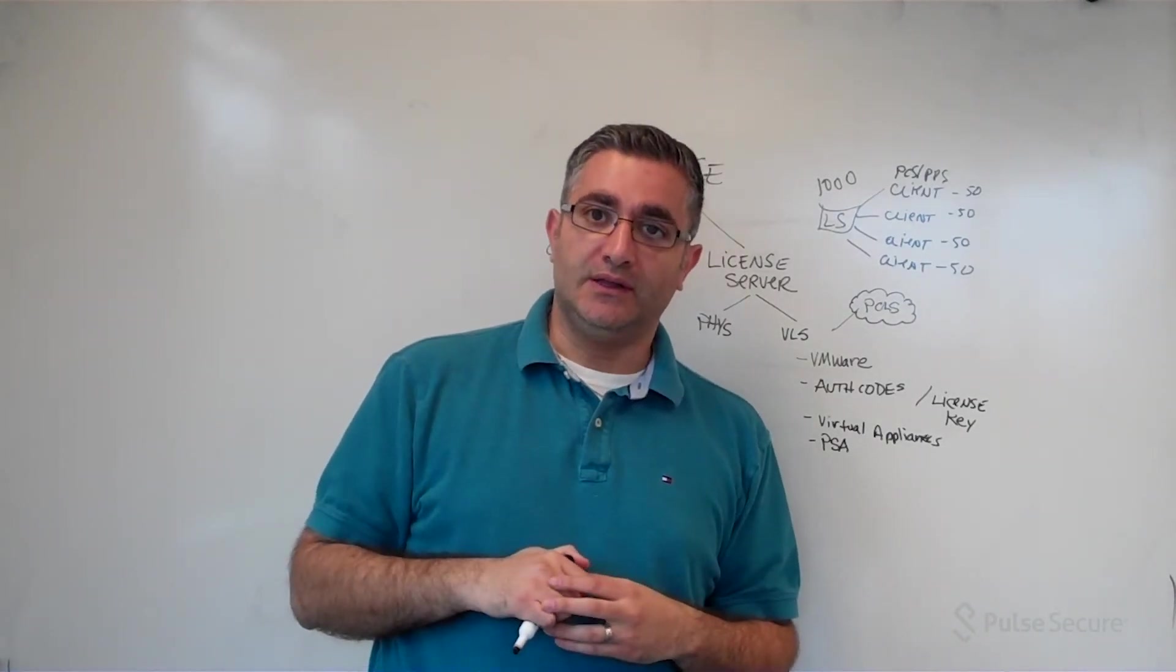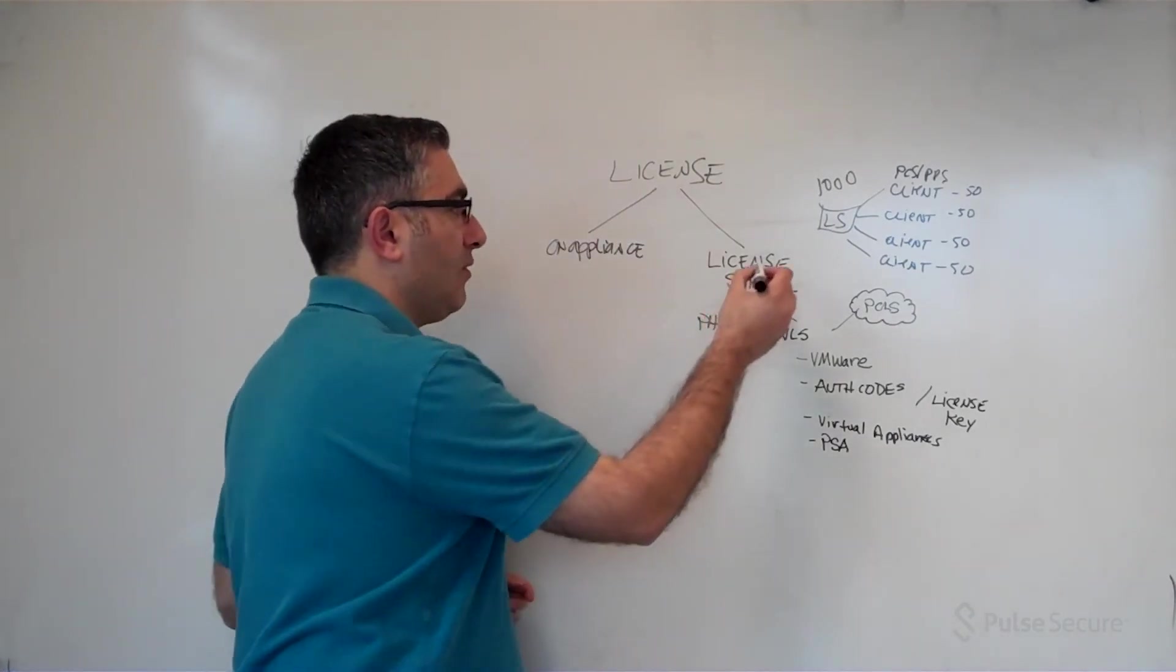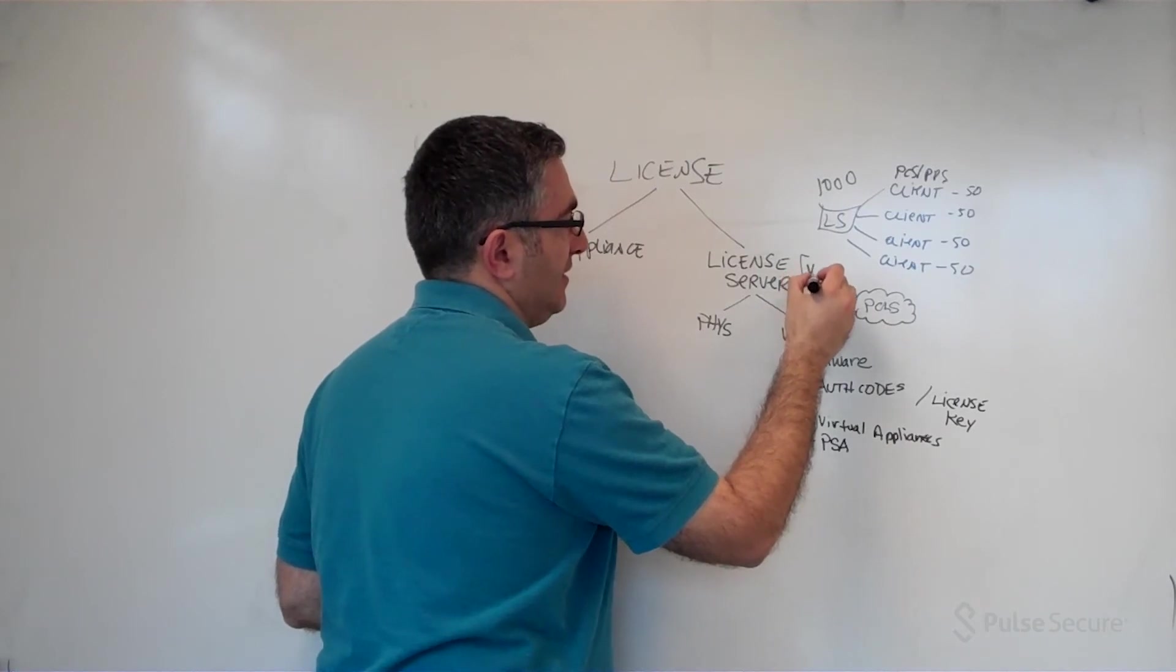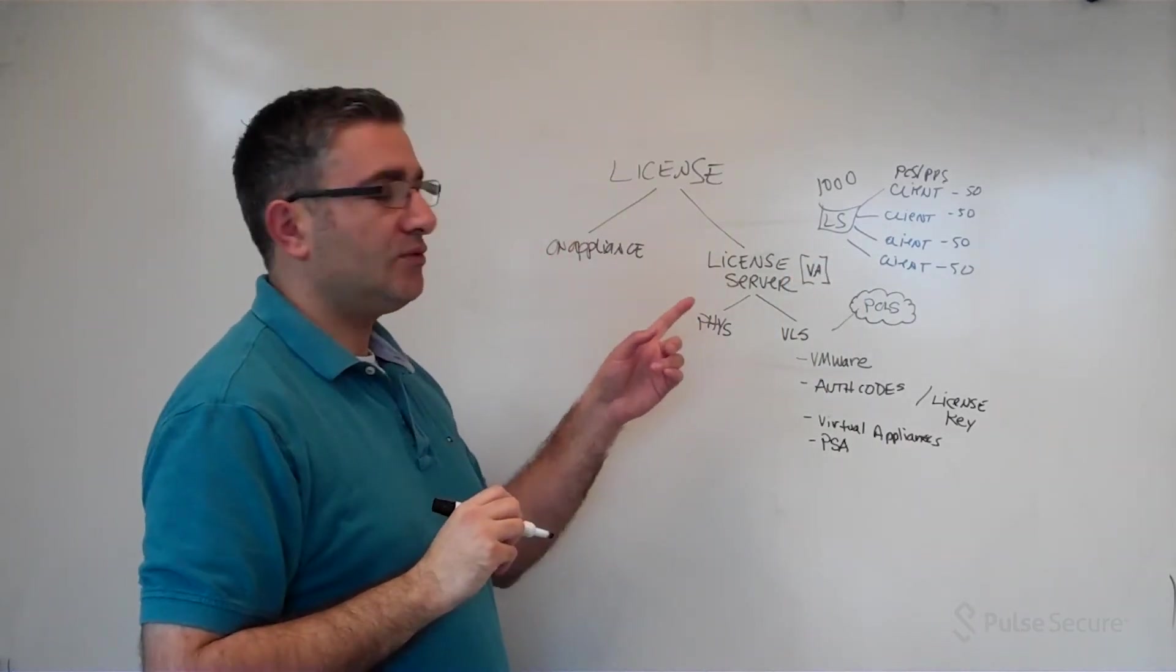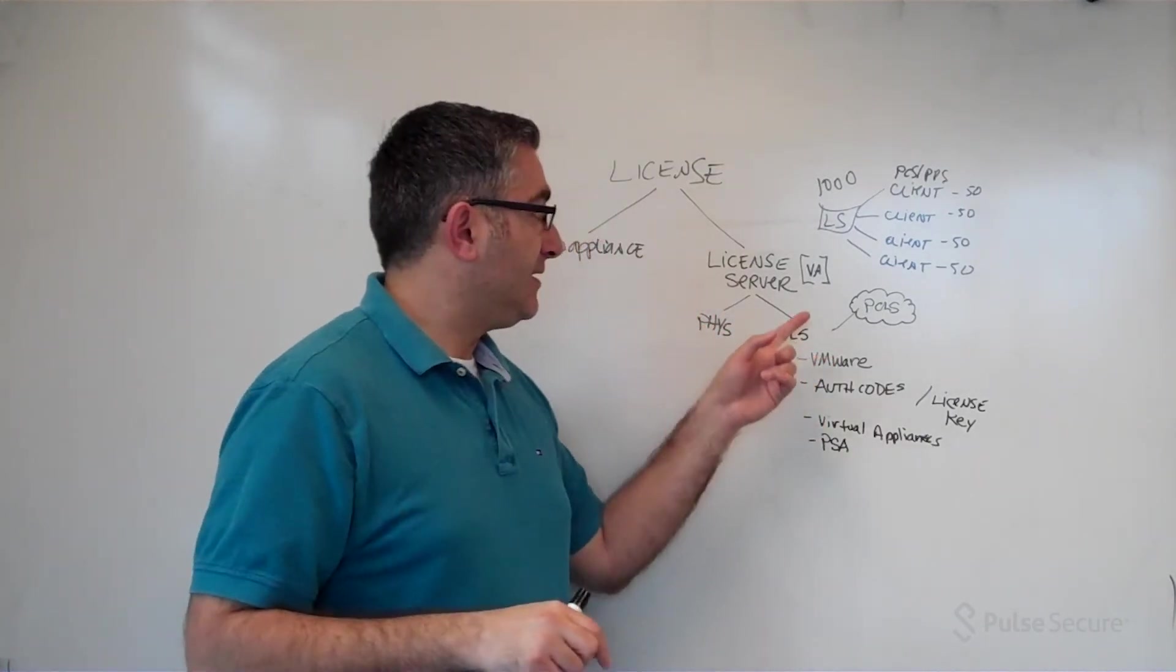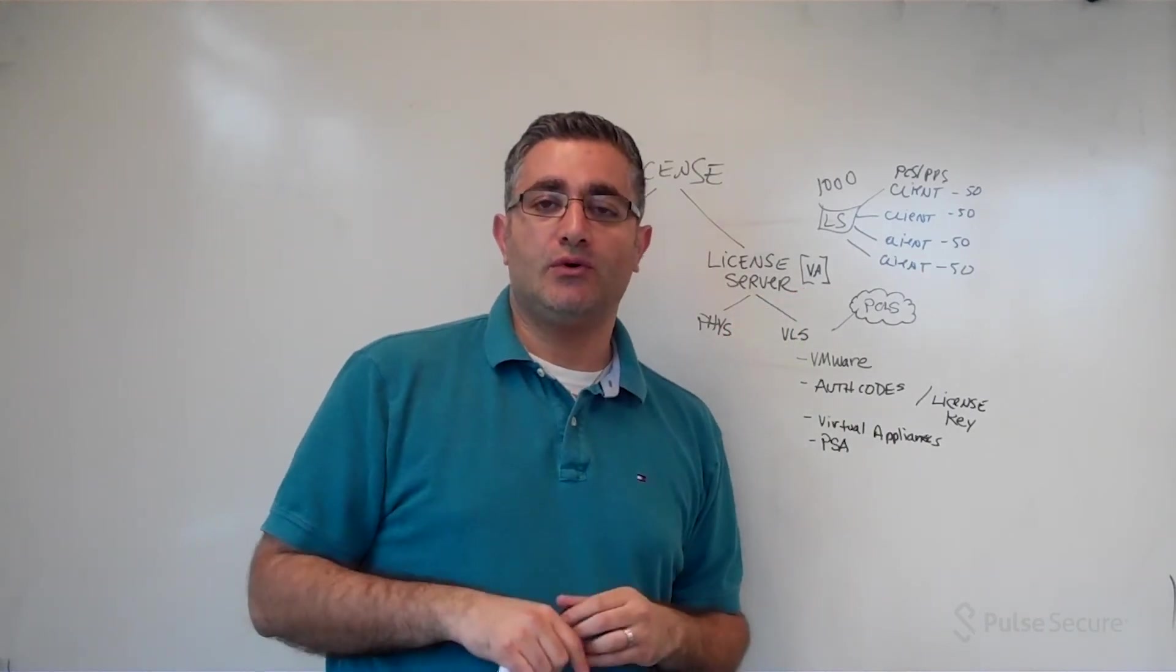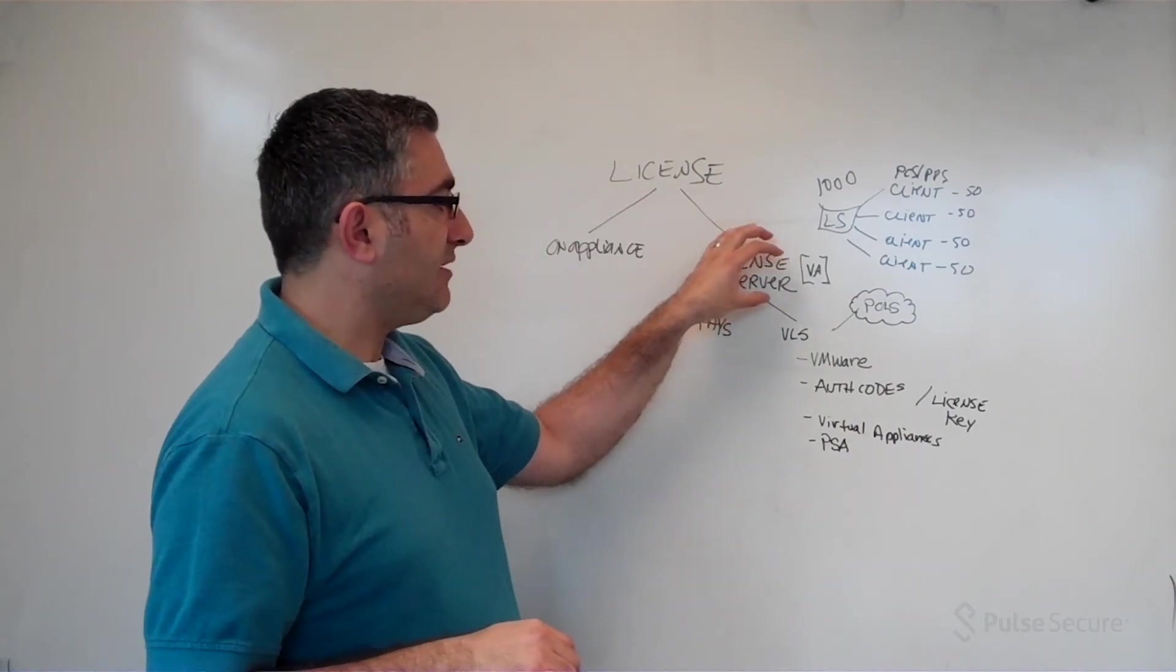So that's kind of how it works. Now, how do you order it? When ordering, what you need to do is order the virtual license appliance. There's a virtual appliance that's the license server. You need to also order the license server license itself that enables the functionality, and of course you order the support.